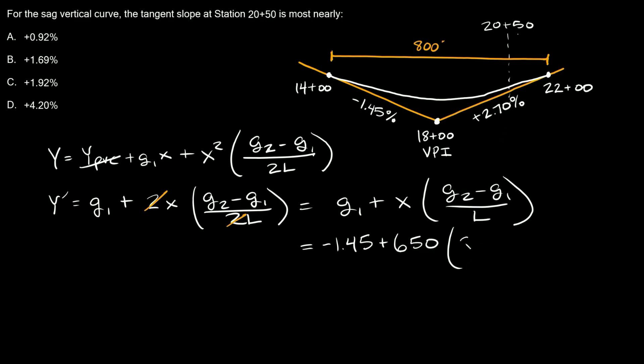G2, which is positive 2.7, minus our first one, which again is negative 1.45, all over L. And again, L is just the full length of the curve, which is 800 in this case.